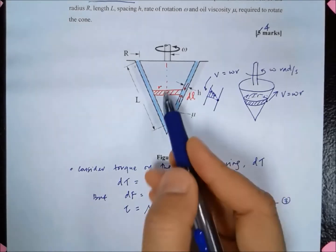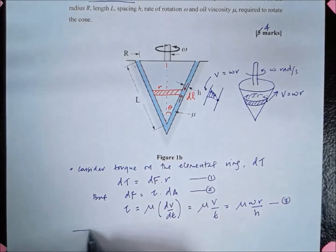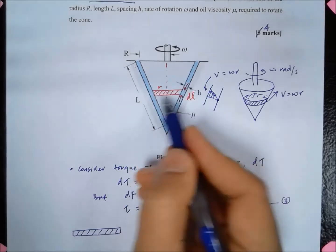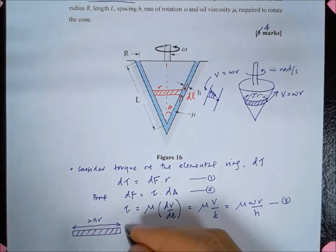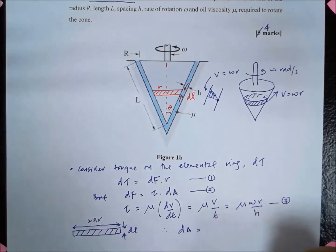We also know that the area of this, if you open this up, the length of this is equal to 2πr and this is dl. So dA is equal to 2πr dl. That's equation number 4.